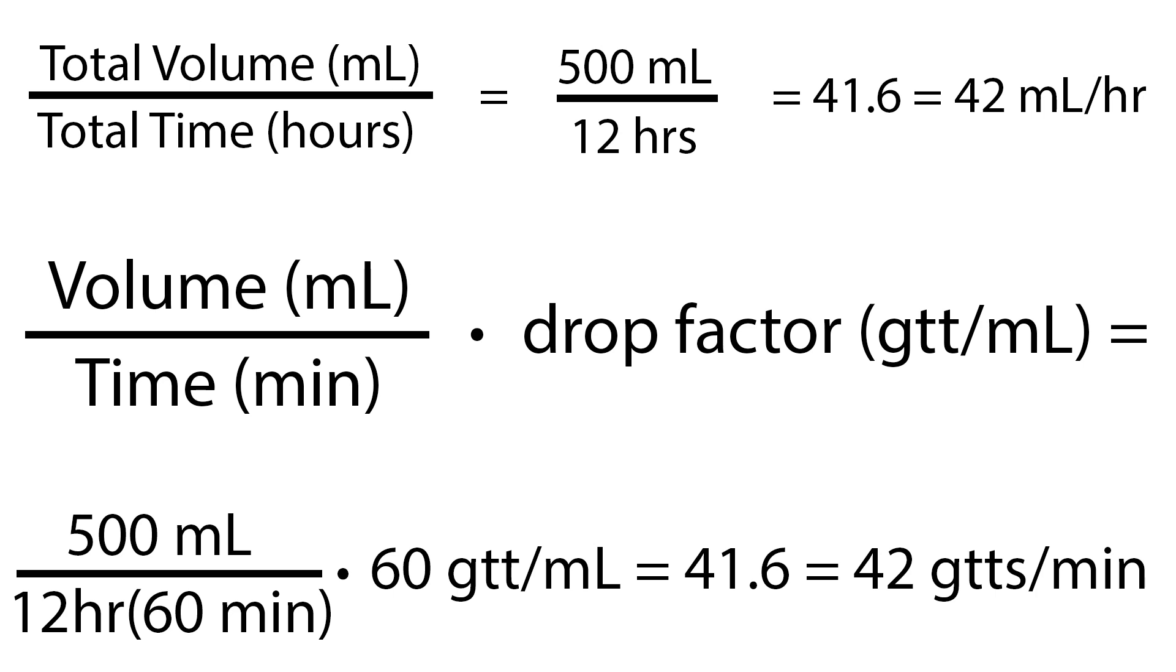The total volume divided by the total time in hours equals 41.6, rounded to 42 mLs per hour. The drops per minute would be calculated as total volume divided by time in minutes, multiplied by the drop factor of 60 drops per minute, which also equals 41.6, rounded to 42 drops per minute.